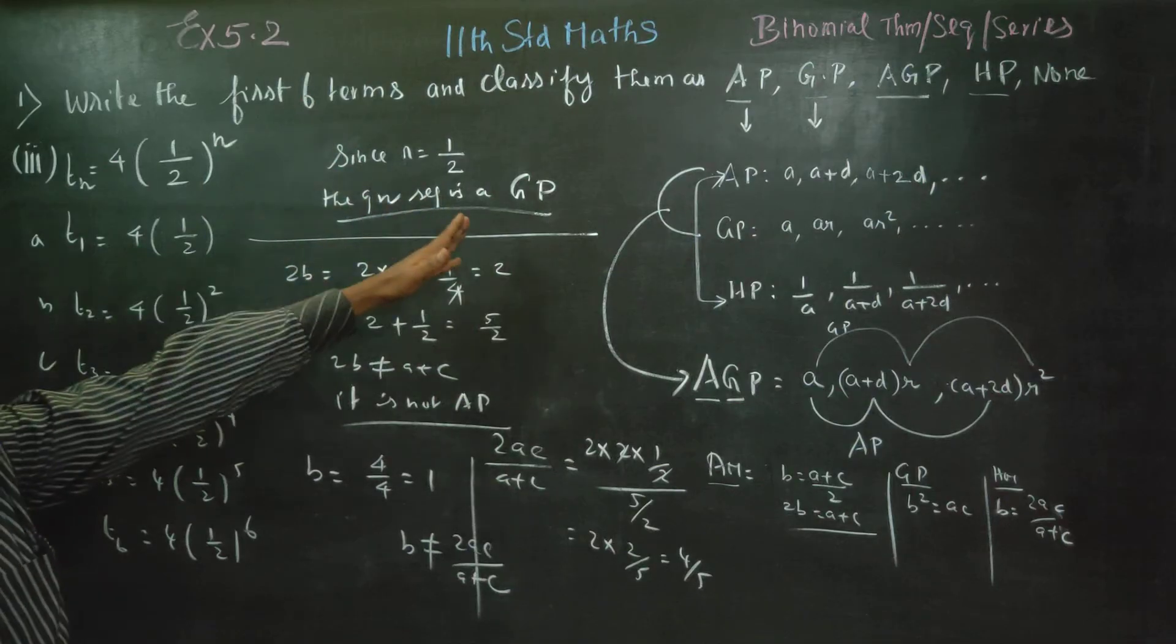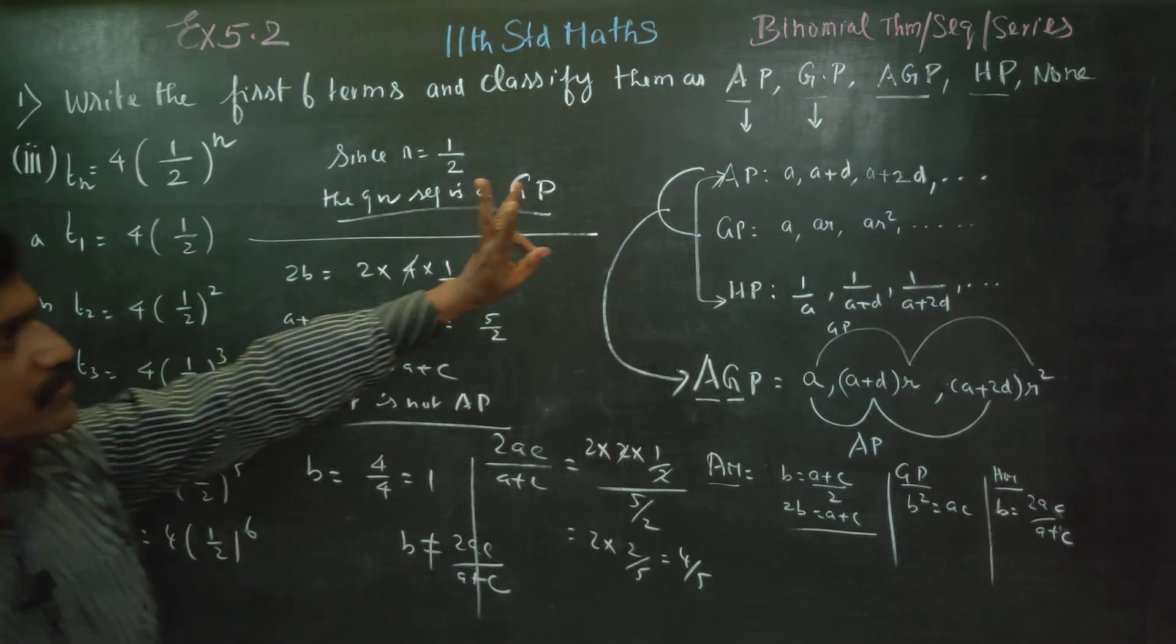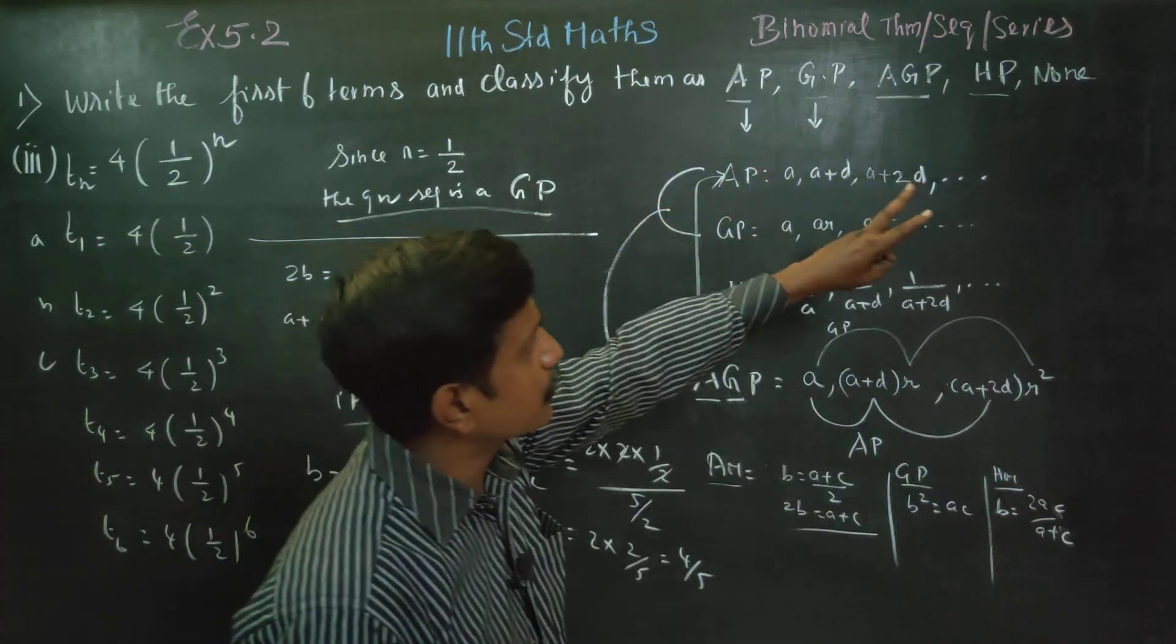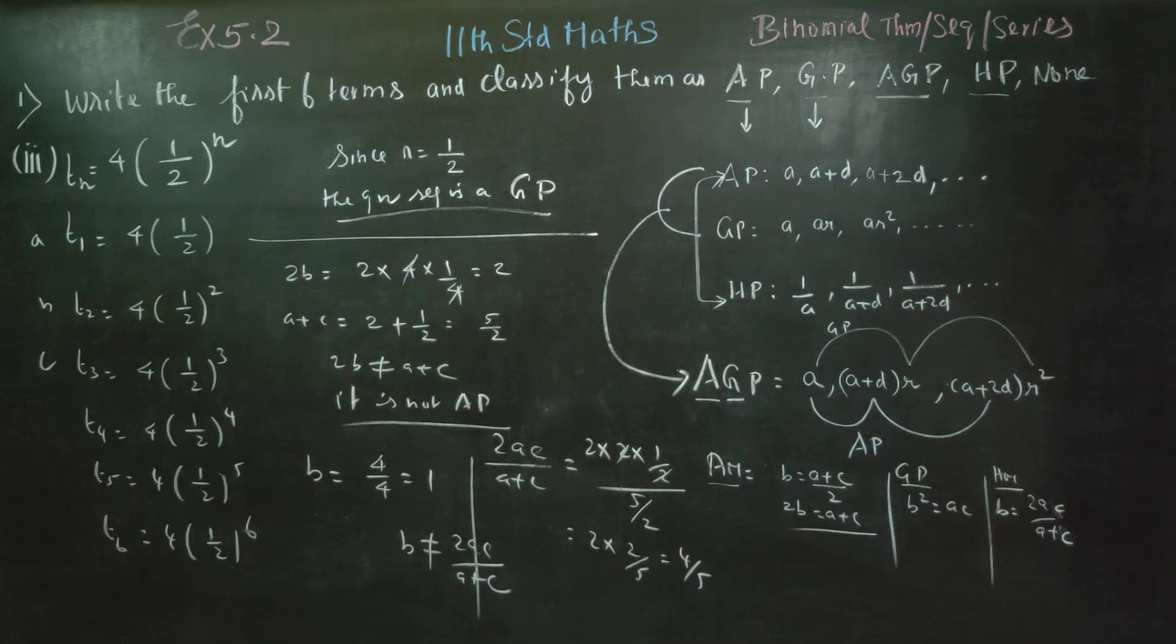The given sequence is a Geometric Progression. It's not an Arithmetic Progression, it's not a Harmonic Progression, it is not an Arithmetico-Geometric Progression. This is the final result for this sum. Okay, thank you.